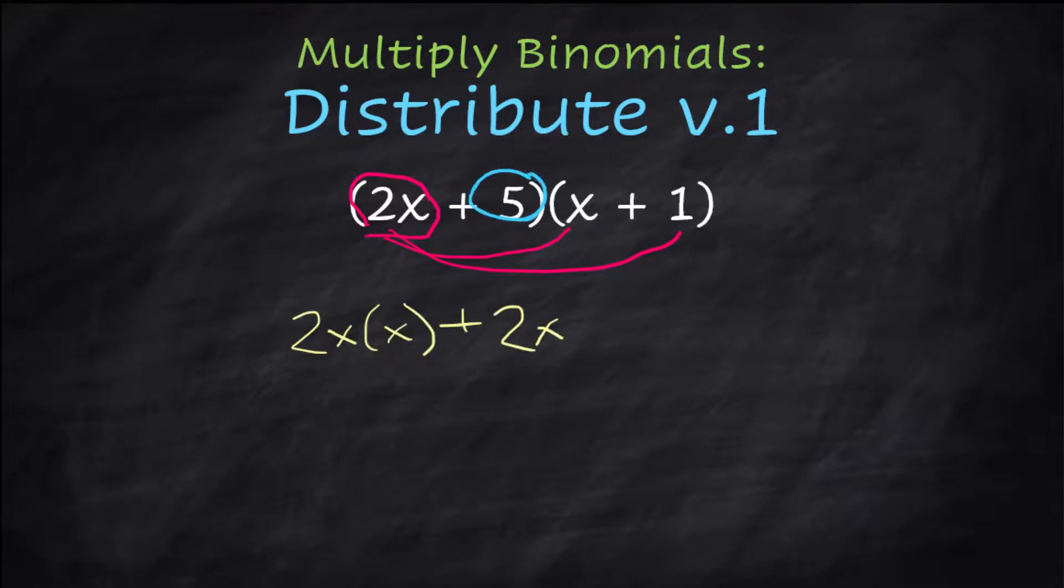Now I'm going to take the 5, and I'm going to distribute it to those same two terms. So 5 times x is plus 5x, and 5 times 1 is plus 5. All right, we already know the answer, so I'm going to write this out really quick.